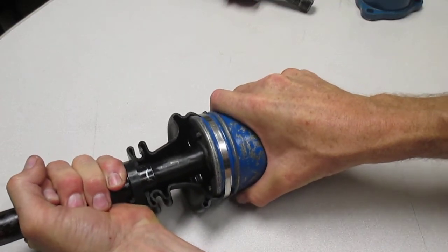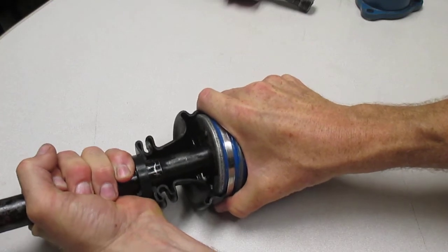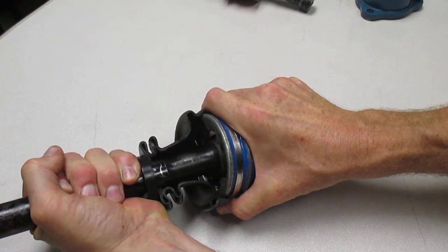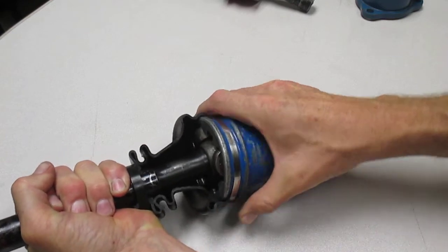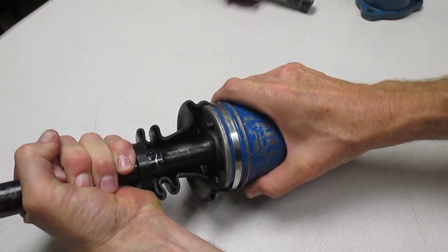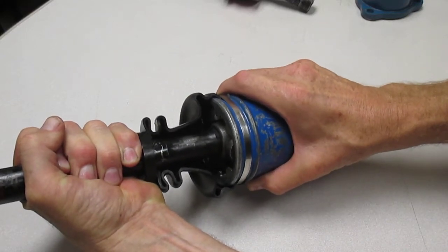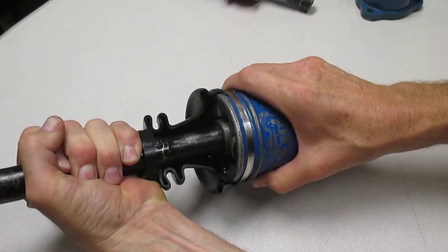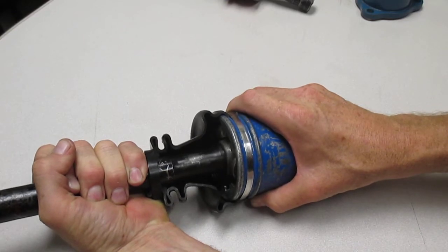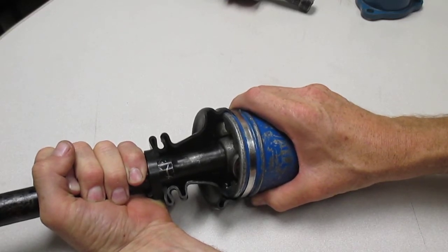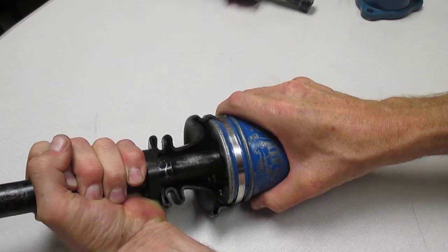And I grab a hold of this outer housing and the shaft. And I twist the shaft back and forth, just twisting. That's a fair amount of play. This one here probably had a click on acceleration. I don't know if it had a vibration at high speeds or not. But it definitely would have a click on acceleration.